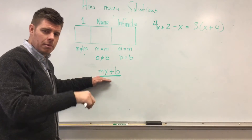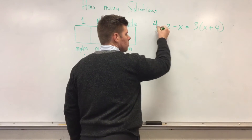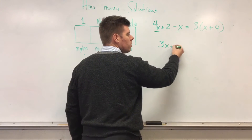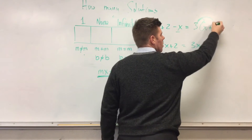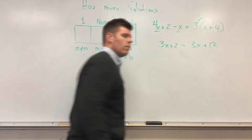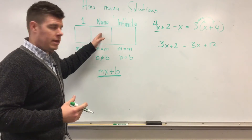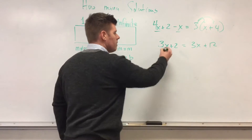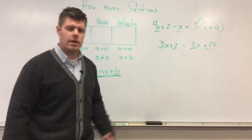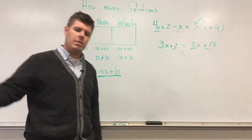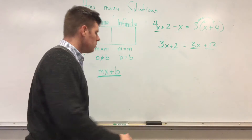Working through the example: on the left, 4x + 2 - x — combining like terms gives 3x + 2. On the right, apply the distributive property: 3(x + 4) = 3x + 12. Notice the X's are the same on both sides — both are 3x — but the B values are different: 2 versus 12. When the M's are the same but the B's are different, the answer is always no solution.